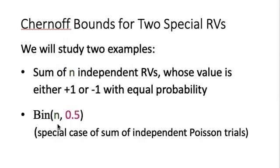The other special random variable is the binomial random variable with parameters n and 0.5. This is a special case of the sum of independent Poisson trials where all indicator probabilities are set to the same value, 0.5. Let's see what Chernoff bounds we can obtain for these special random variables.